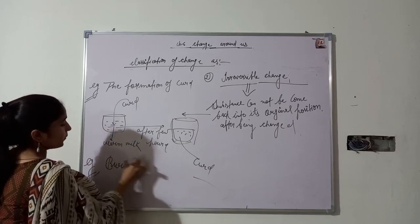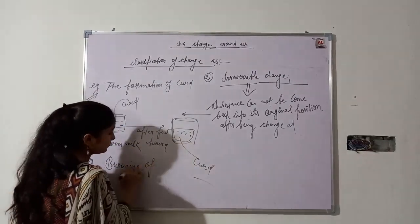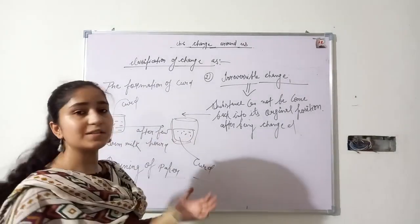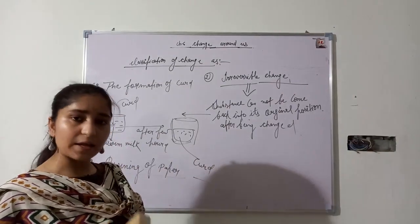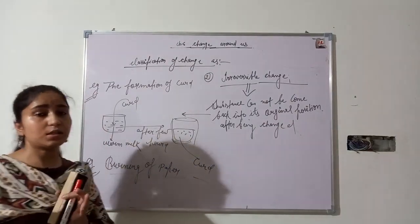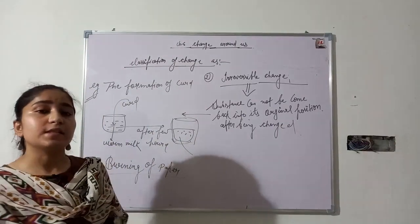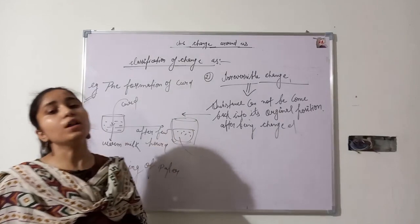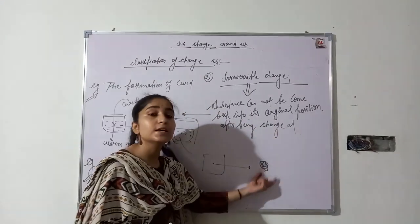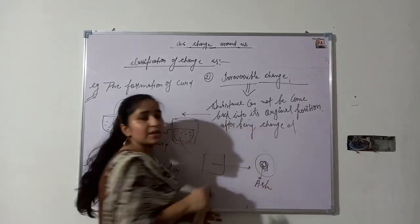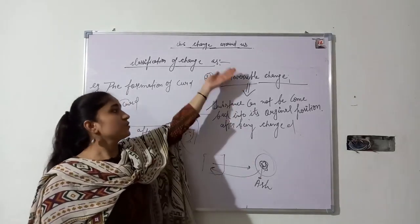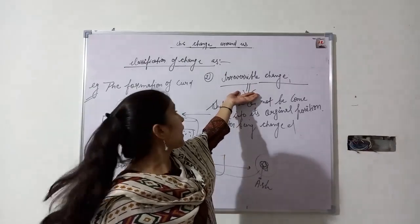Why does burning of paper come under irreversible change? Because after being burnt, paper converts into ash and smoke — carbon dioxide and water vapors are produced. Ash is the substance left behind after burning, the black substance. This ash cannot be converted back into paper again. So this type of change also comes under irreversible change.